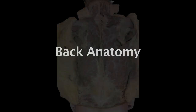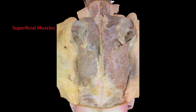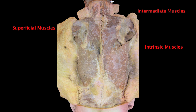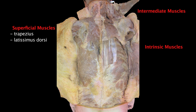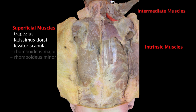The back musculature is organized into three main divisions: the superficial or extrinsic layer, the intermediate layer, and the deep or intrinsic layer. The superficial layer is composed of the trapezius, the latissimus dorsi, levator scapula, and the major and minor rhomboids.